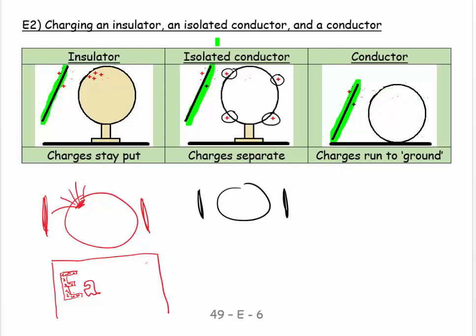then what happens is that the charges, when they're transferred, see that, oh, they can actually move to this huge other object called the planet. And it's a relatively easy path.